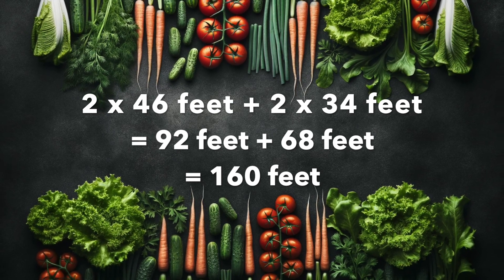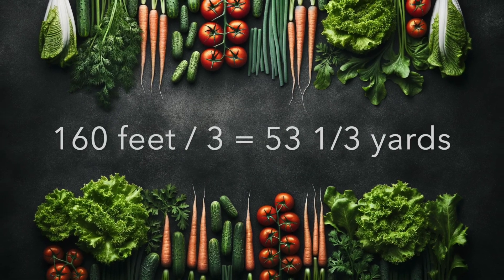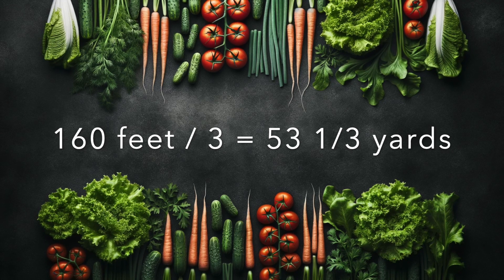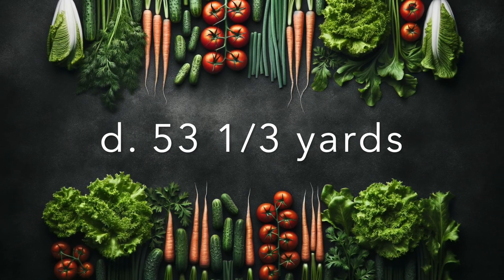But wait, the options are in yards. Remember, 3 feet make a yard. So, converting, 160 feet divided by 3 equals 53 and a third yards. The correct answer is D, 53 and a third yards.